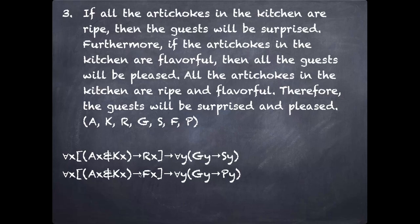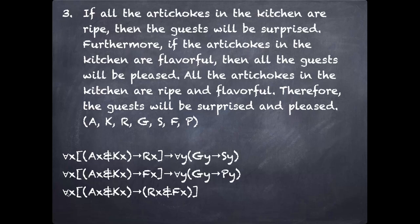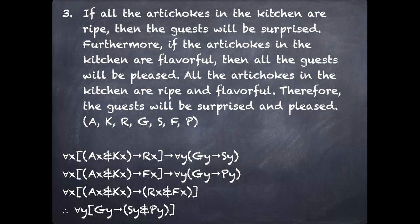Our second premise is similar: all the artichokes in the kitchen are flavorful, and if that's true, then all the guests will be pleased. And finally, all the artichokes in the kitchen are ripe and flavorful — that is, for all X, if X is an artichoke in the kitchen, then X is ripe and flavorful. Therefore, all the guests will be surprised and pleased. So that's how I would represent that argument. Let's head over to Carnap and prove it.